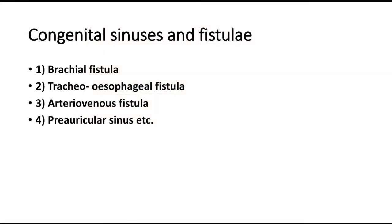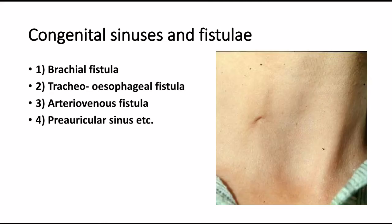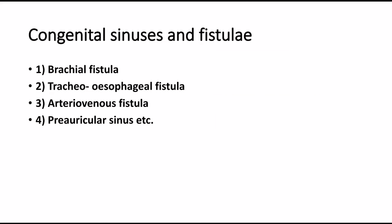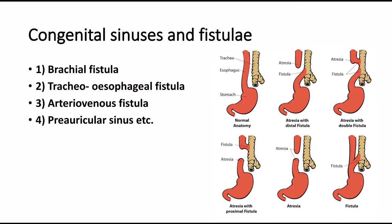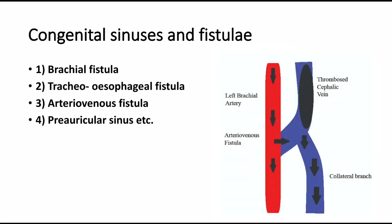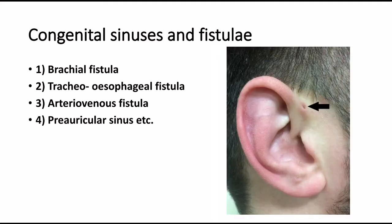Congenital sinuses and fistulae include: 1. Branchial fistula, 2. Tracheoesophageal fistula, 3. Arteriovenous fistula, and 4. Preauricular sinus.